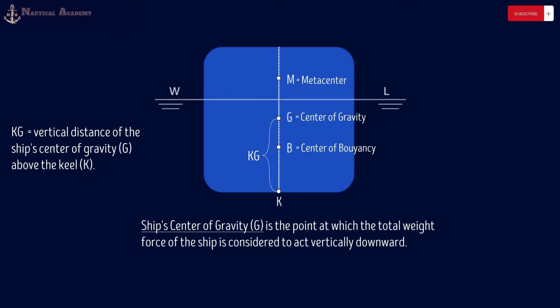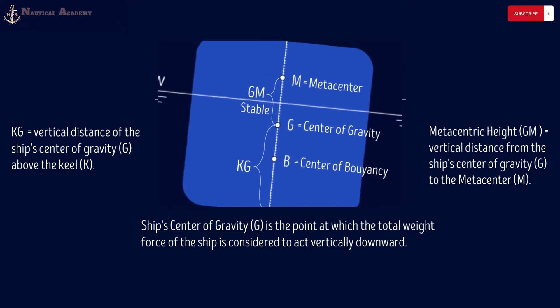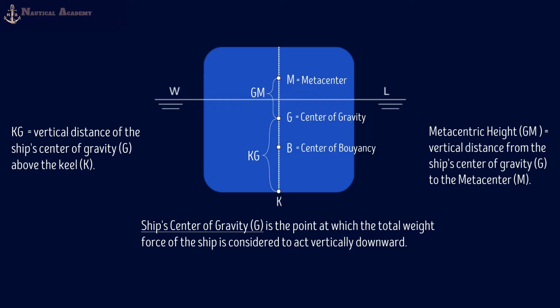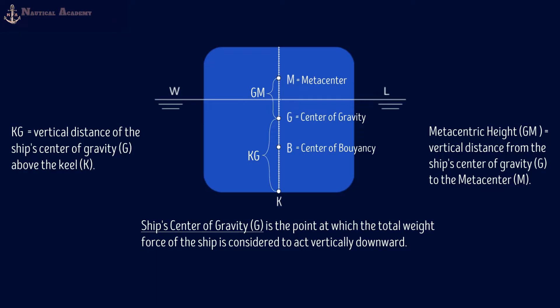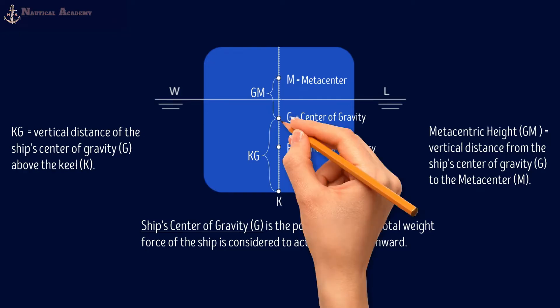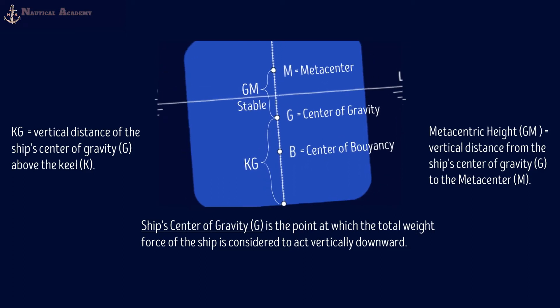The ship's center of gravity is essential for determining its stability characteristics, such as metacentric height GM — the vertical distance from the ship's center of gravity to the metacenter — which influences its ability to resist rolling and capsizing. If G is below M, the ship is stable. If G is above M, the ship is unstable and prone to capsizing. The ship's center of gravity affects its ability to handle rough seas and maintain an upright position.